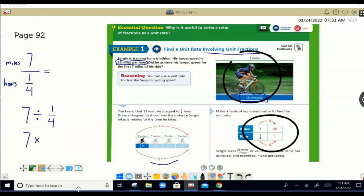How do we do seven divided by one-fourth? We can just multiply by the reciprocal, which is four over one, which is the number four. So seven times four is 28.